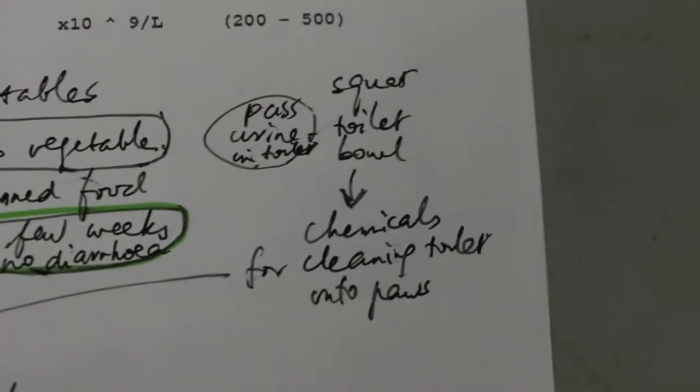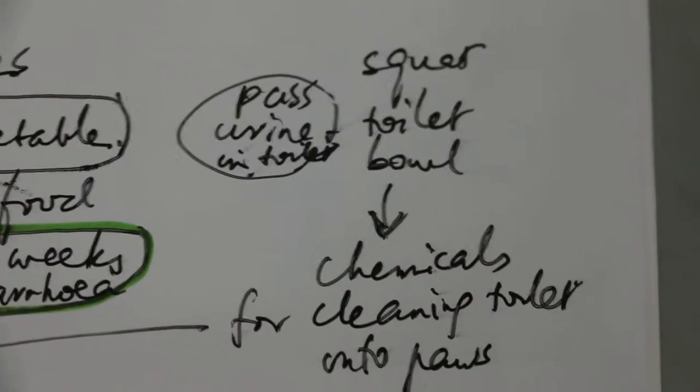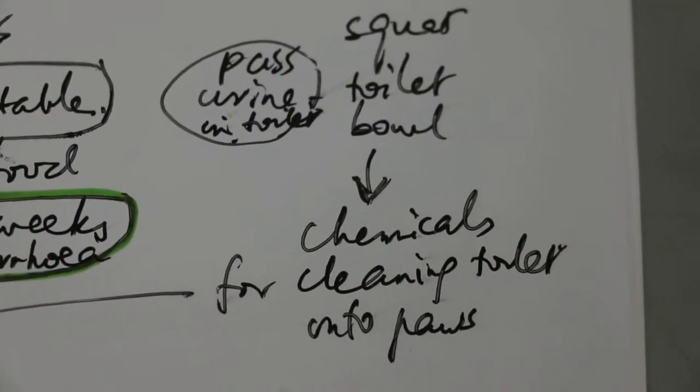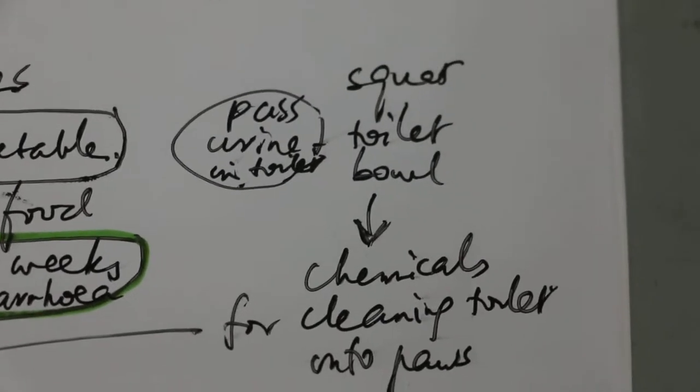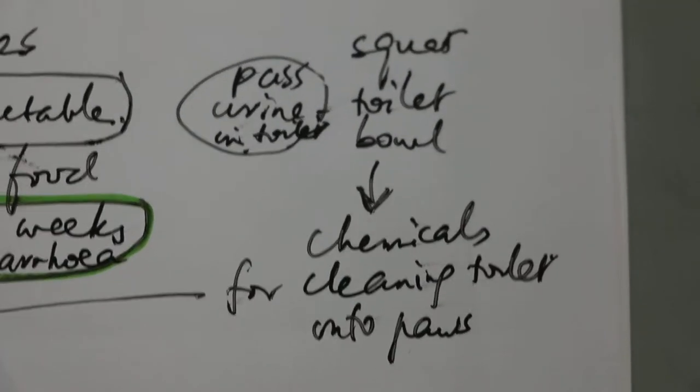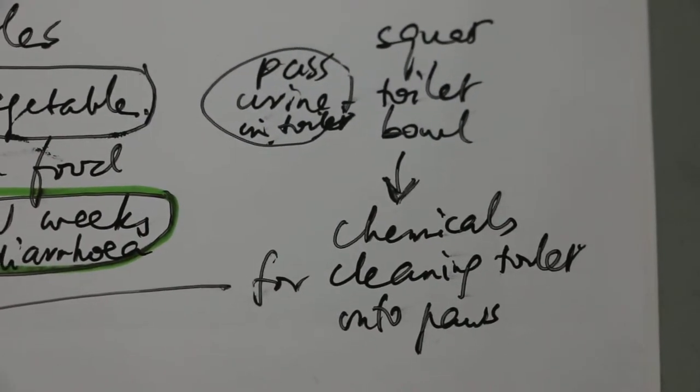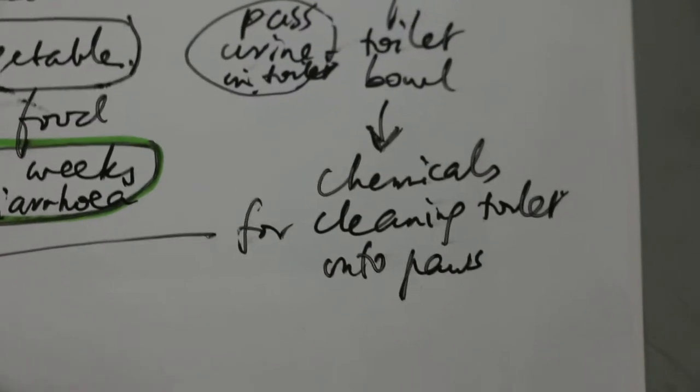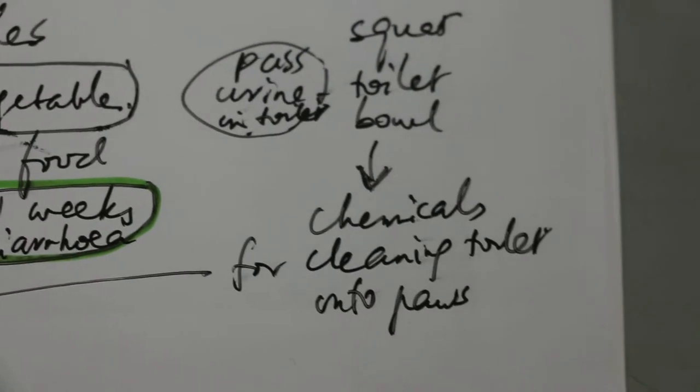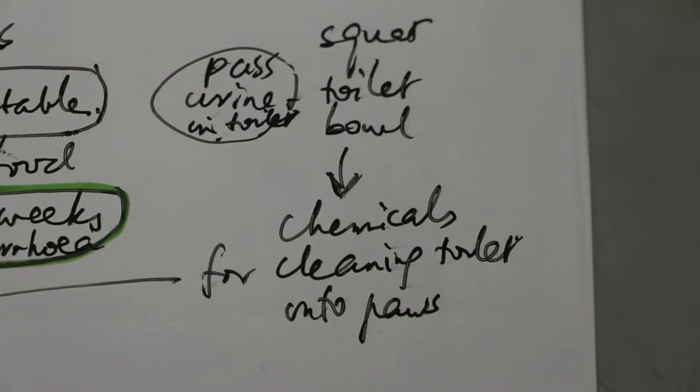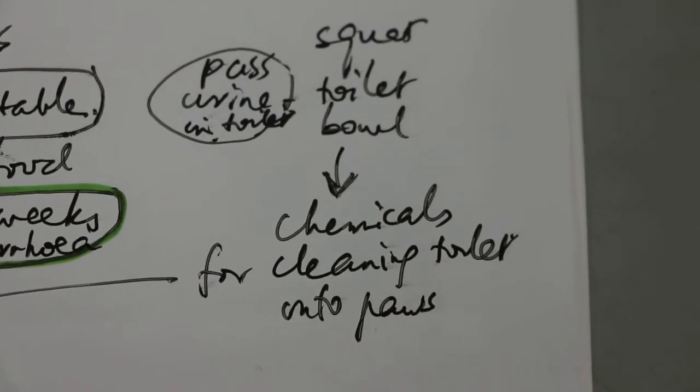Then another management part of it is that the cat goes to the squat toilet bowl. Now in Singapore there are two types of toilets - one is a squat, one is where you sit on it. The squat toilet itself will normally be full of chemicals, since chemicals are used to clean the toilet floor.